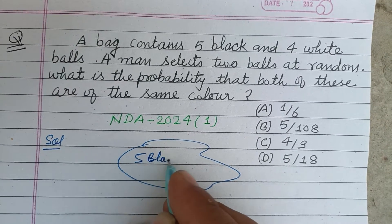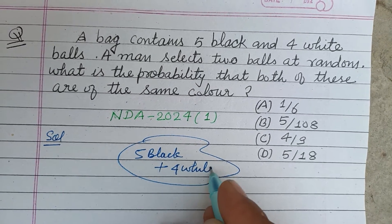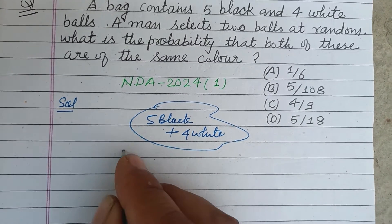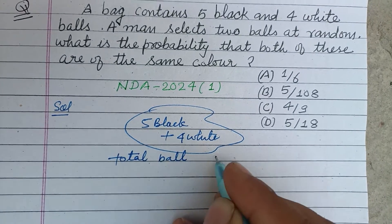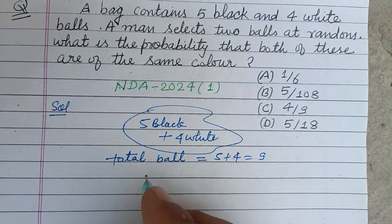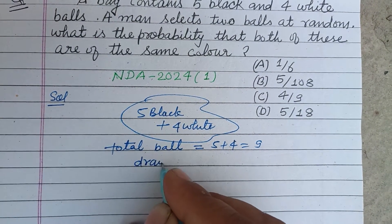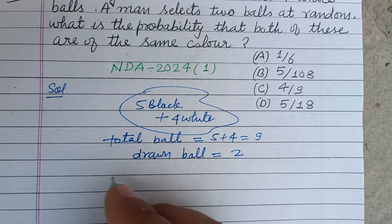So total balls in the bag are five plus four, that is nine. Two balls are drawn.